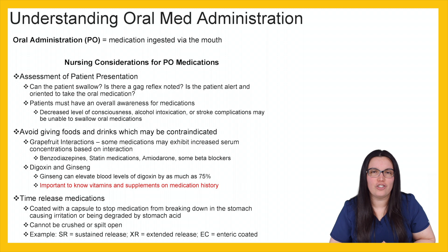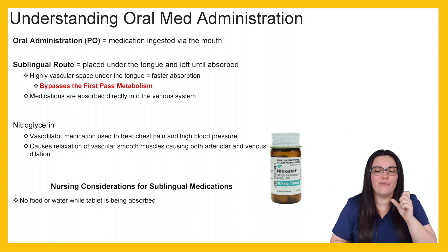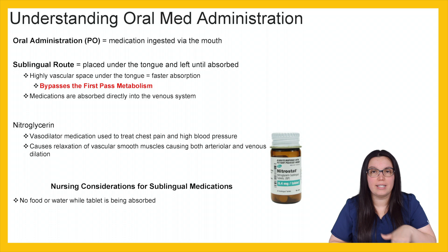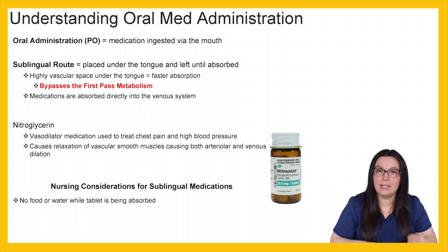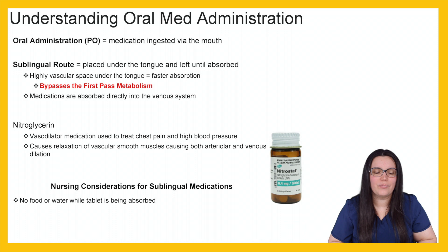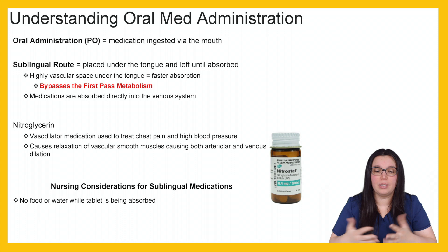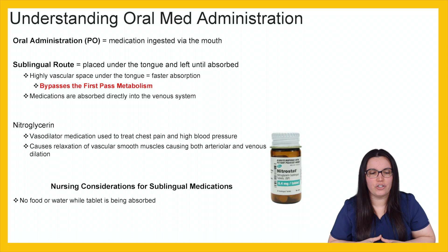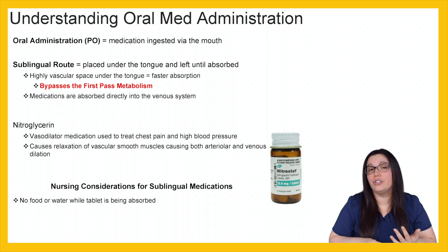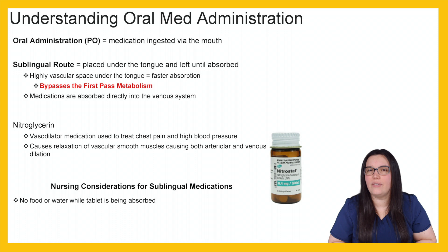An additional oral route is sublingual — the medication is placed under the tongue and left there until absorbed. Underneath the tongue is highly vascular, so absorption is much faster than ingesting orally. It completely bypasses first-pass metabolism, bypassing both the stomach and liver, and is absorbed directly into the venous systemic circulation. Nitroglycerin is a key sublingual medication — a vasodilator used for chest pain and high blood pressure that causes relaxation of vascular smooth muscle and both arterial and venous dilation. Ensure the patient isn't eating or drinking water while the tablet is being absorbed, as it must absorb through the mucosal membrane.